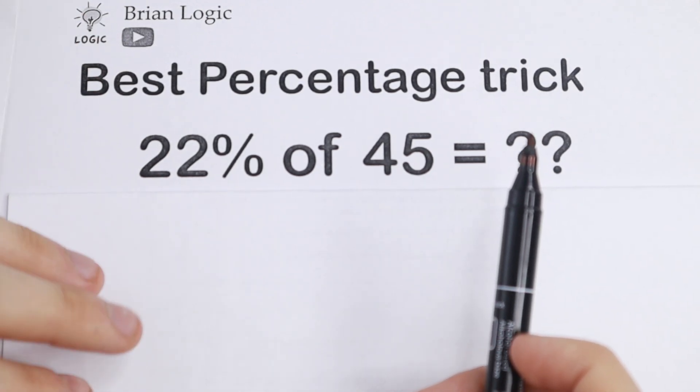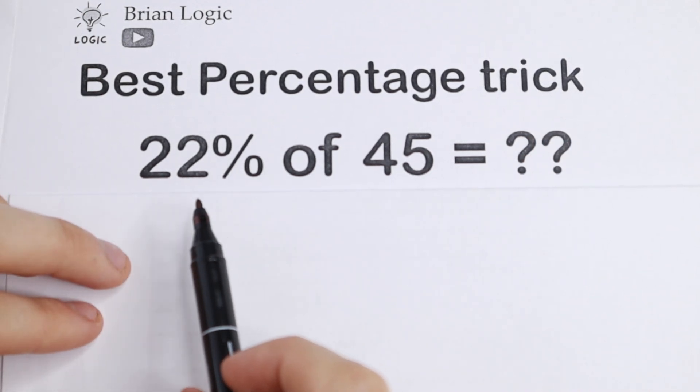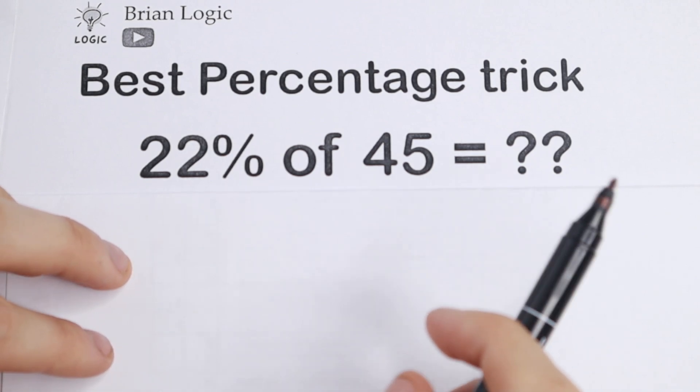Not good, it's not like 50, 25, 75, but you have, for example, 22% of 45.